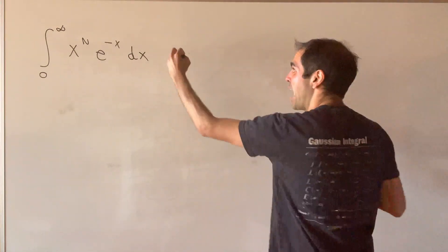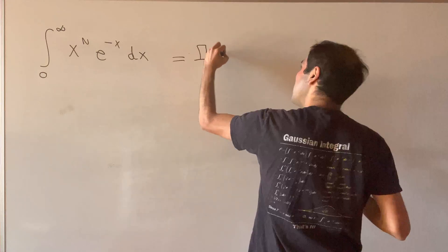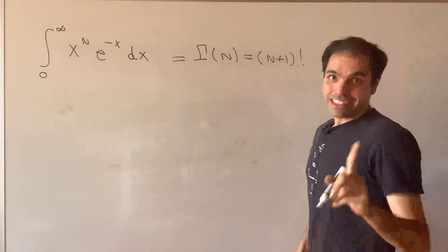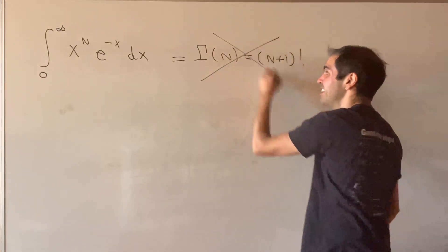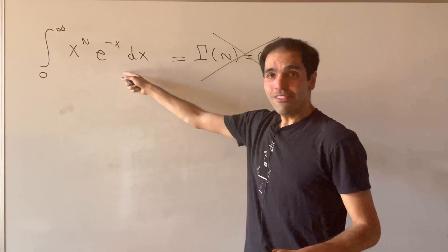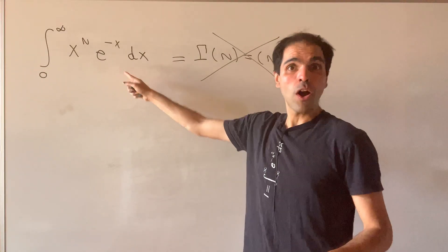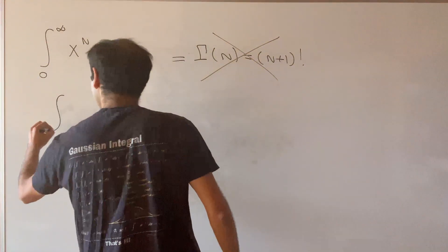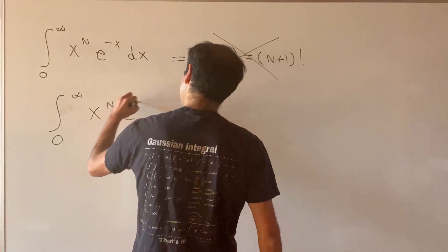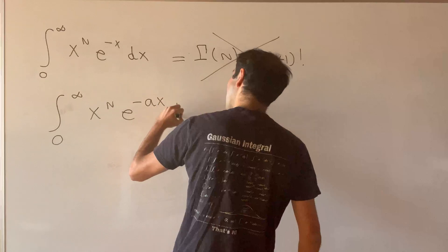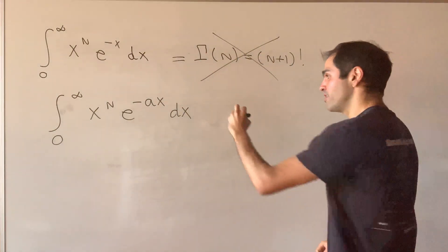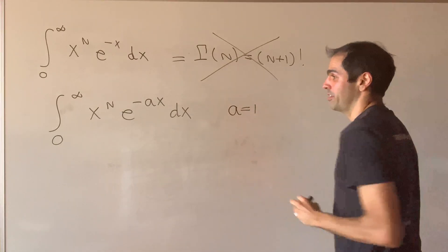I know you could use a gamma function to say gamma n, which is n plus 1 factorial, but this is not how the cool people do it. In fact, let me show you the swag way of doing it, which is by evaluating a more complicated integral. Let's do the integral from 0 to infinity of x to the n times e to the minus ax dx, because then we'll get our result by setting a equals 1.